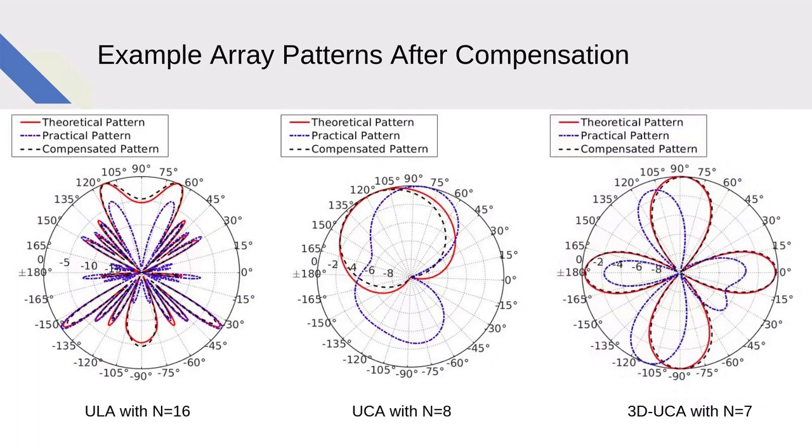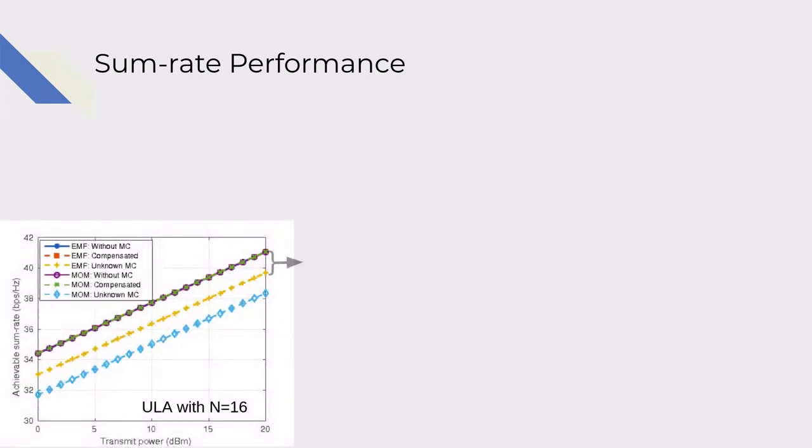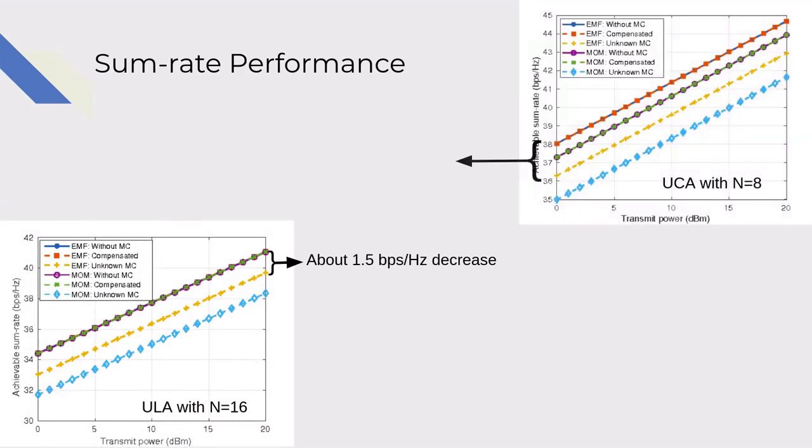Let's see the achievable sum rate performance, with and without mutual coupling compensation, in some of the scenarios in the paper. In ULA, there is about 1.5 bits per second per hertz sum rate degradation due to its symmetric structure.